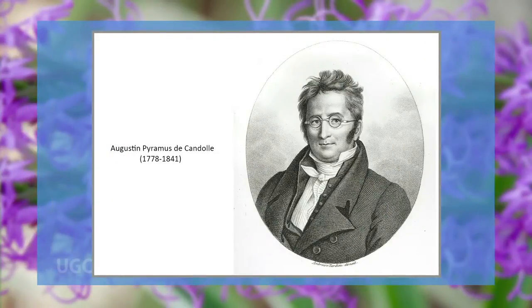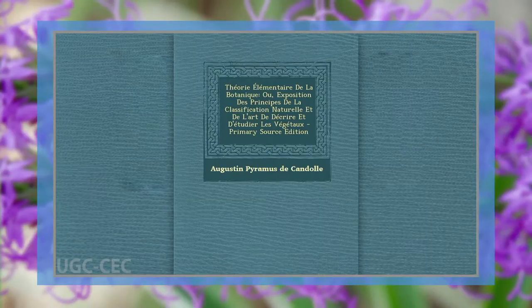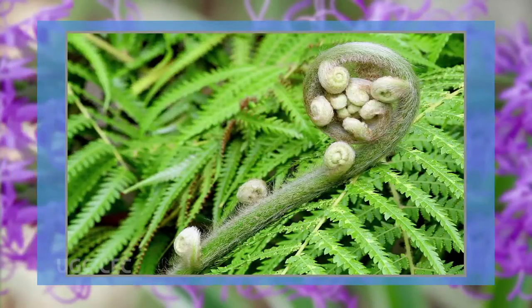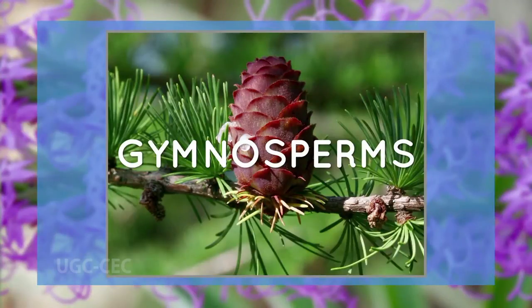Augustin De Candolle died on 9 September 1841 in Geneva after being sick for many years. The classification by A. P. De Candolle recognized 161 natural orders. The number was increased to 213 in the last revision of Théorie Élémentaire de la Botanique, edited by Alphonse in 1844. Grouped primarily on the basis of the presence or absence of vascular structures, fungi were provided a place coordinate with monocots, and contrary to Jussieu, gymnosperms were given a place although among dicots.